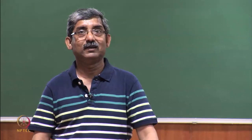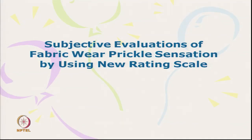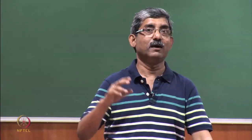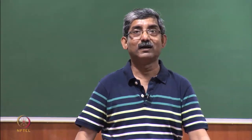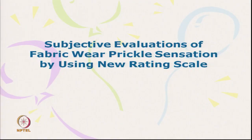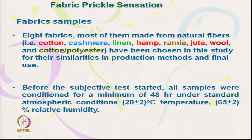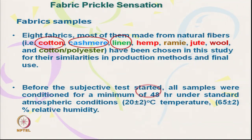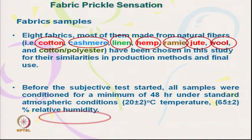A specific study was conducted with different types of fabric to assess the difference in prickle sensation using a rating scale. Eight different fibres were selected with a wide range of surface characteristics, bending characteristics, and diameters. These were cotton, cashmere, linen, hemp, ramie, jute, wool, and a cotton-polyester blend. Most are natural fibres, except the cotton-polyester blend.